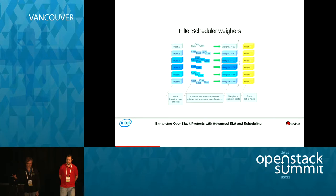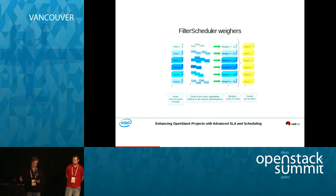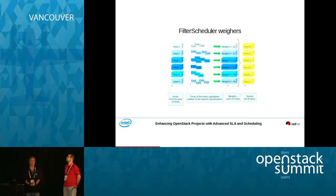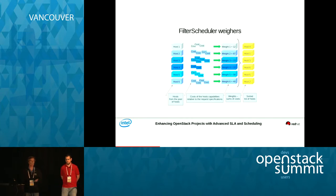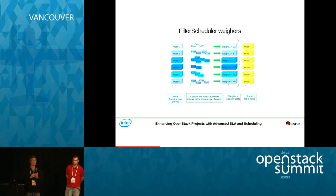After you've come up with a set of hosts that are acceptable, you then have to throw these hosts through a set of weighers. The weigher is basically based upon some metric — be it amount of memory available, number of instances running on this particular host, or whatever metric is appropriate — it will rank the hosts and come up with a value for each. Then you'll come up with a list of your hosts from the most acceptable to the least acceptable to try and satisfy that request.